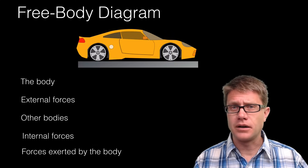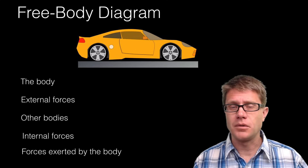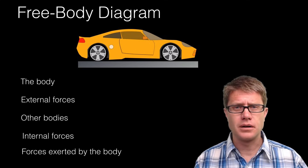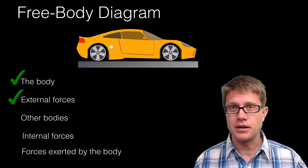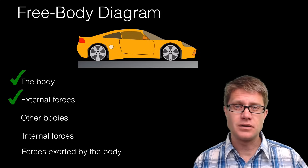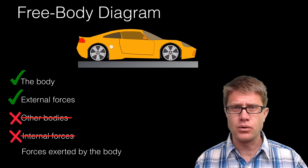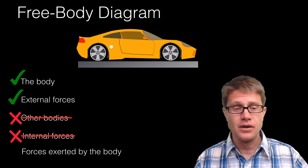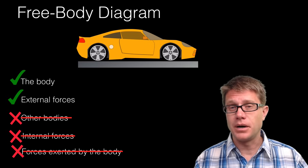When drawing a free body diagram — say, of this car — you really want to include only two things: the body and external forces acting on the body. Do not make these common mistakes: do not include other bodies, do not include internal forces such as the car acting on itself, and do not include forces exerted by the body.